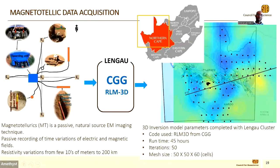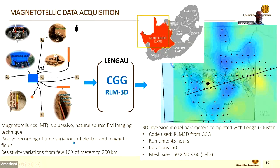The other method we use is magnetotellurics. This is a ground-based process where we go to the field with equipment that measures the electric and magnetic properties of rocks. It is a passive source method — we use natural sources such as lightning to generate the energy signal, as compared to the airborne method where the loop generates a signal. We measure the time variation of the electric and magnetic properties and compute the resistivity variation to a depth of 200 meters.